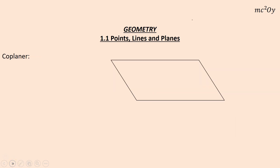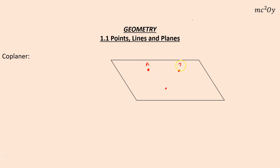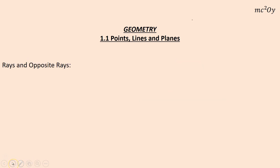Coplanar just means together on a plane. In order to be coplanar, you'd have three points — A, B, and C — together on a plane. That's a pretty easy concept.